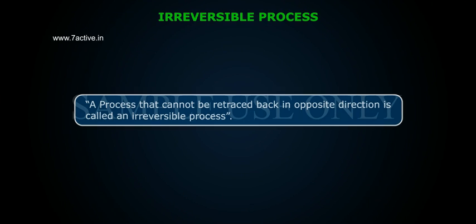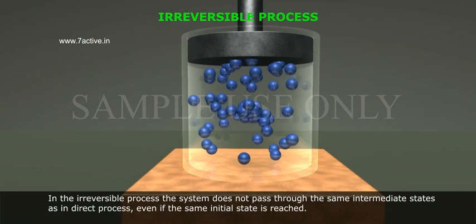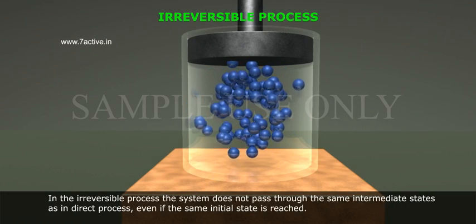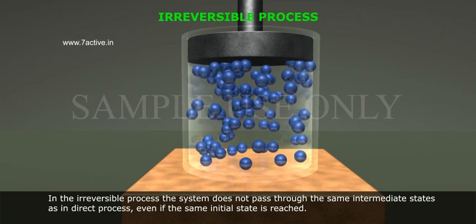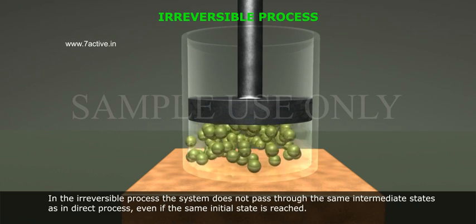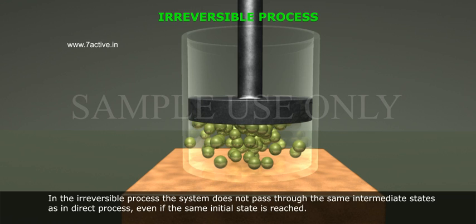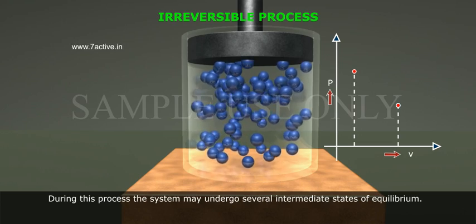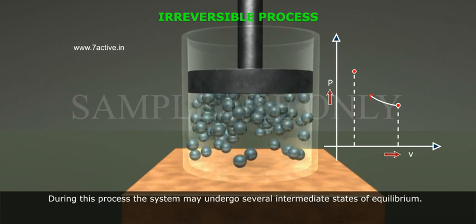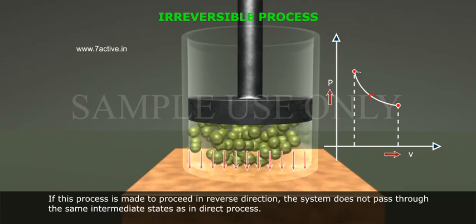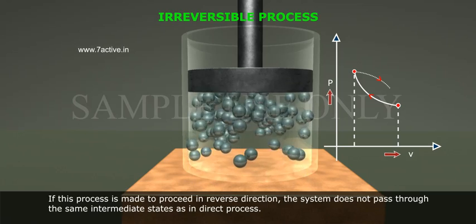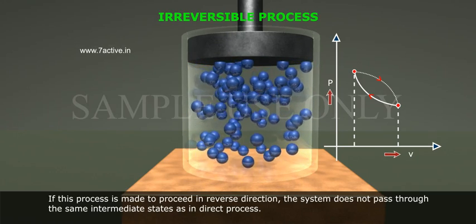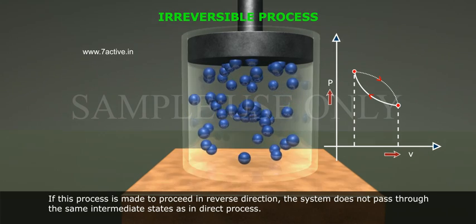Irreversible Process: A process that cannot be retraced back in the opposite direction is called an irreversible process. During this process, the system may undergo several intermediate states of equilibrium. If this process is made to proceed in reverse direction, the system does not pass through the same intermediate states as in the direct process, even if the same initial state is reached.